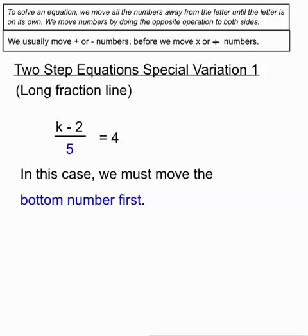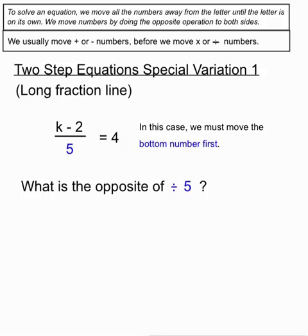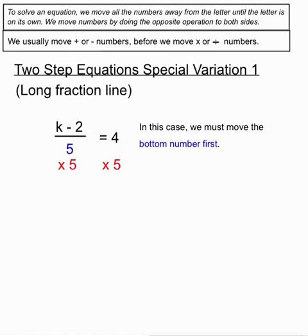So that's the key difference here. What's the opposite of a divide by 5? Because the bottom of a fraction we think is dividing into the top. So what's the opposite of a divided by 5? It's a multiply by 5. So we're going to multiply by 5 on both sides of our equation. On the left hand side when we have a divided by 5 and a multiply by 5 they'll cancel each other out nicely and in this case we're left with the k minus 2 totally on its own.